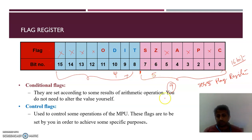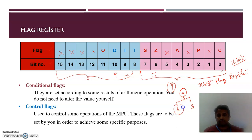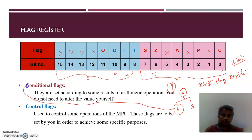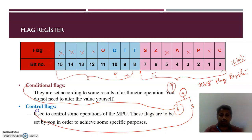Out of the total 16 bits, there are 9 flags. These 9 flags are classified into two groups: 6 flags belong to the category of conditional flags and 3 flags belong to the category of control flags.